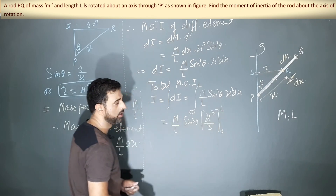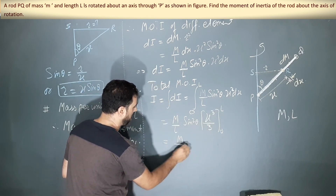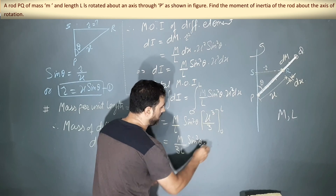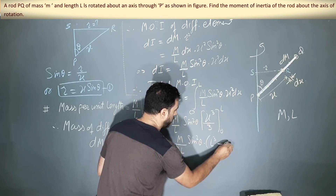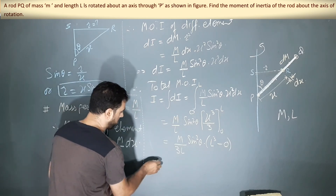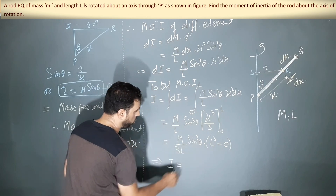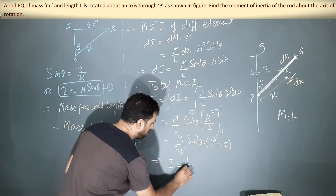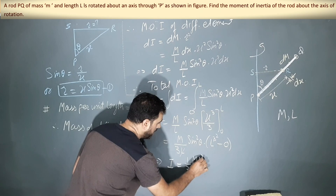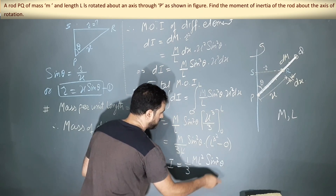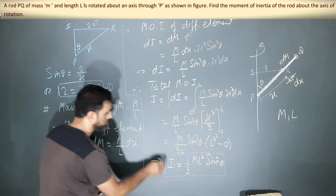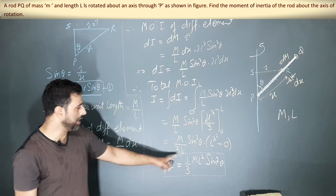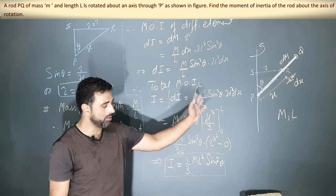Evaluating the limits: substituting the upper limit gives L³, and the lower limit gives 0. So we have (M/L)·sin²theta·(L³/3). The L cancels, leaving L². Therefore, I = (1/3)·M·L²·sin²theta. This is the moment of inertia of the rod rotating about the axis through P at angle theta.